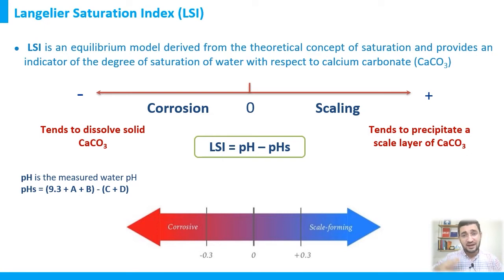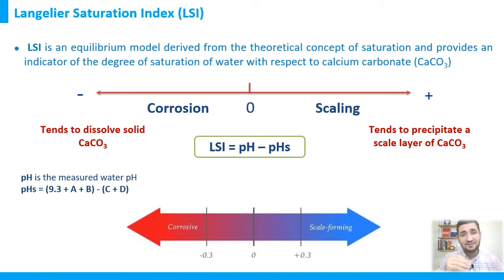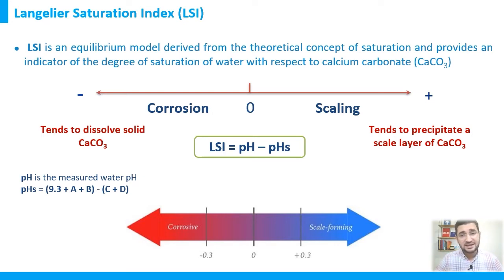If you find your LSI within the target range in a cooling system, desalination plant, or any other application, that doesn't mean there is no scaling tendency overall — because LSI addresses only one type of scale: calcium carbonate, which is the most dominant one in water systems.